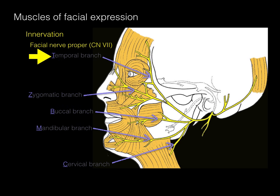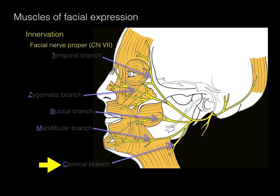The way to remember these is to take the first letter of each — T, Z, B, M, and C — and make the acronym 'To Zanzibar By Motor Car,' where the first letter of each of these branches forms this little funny acronym.